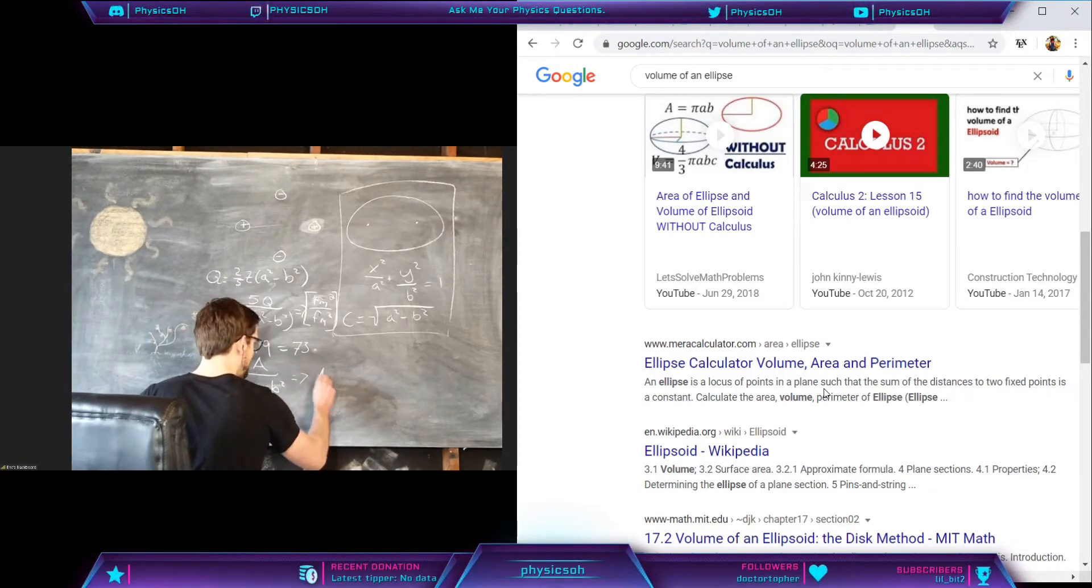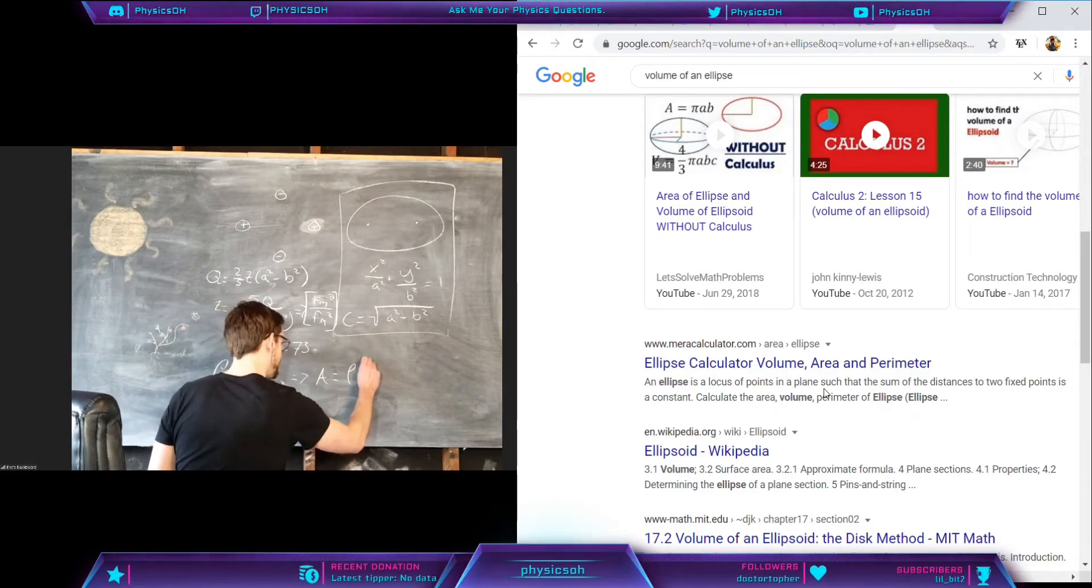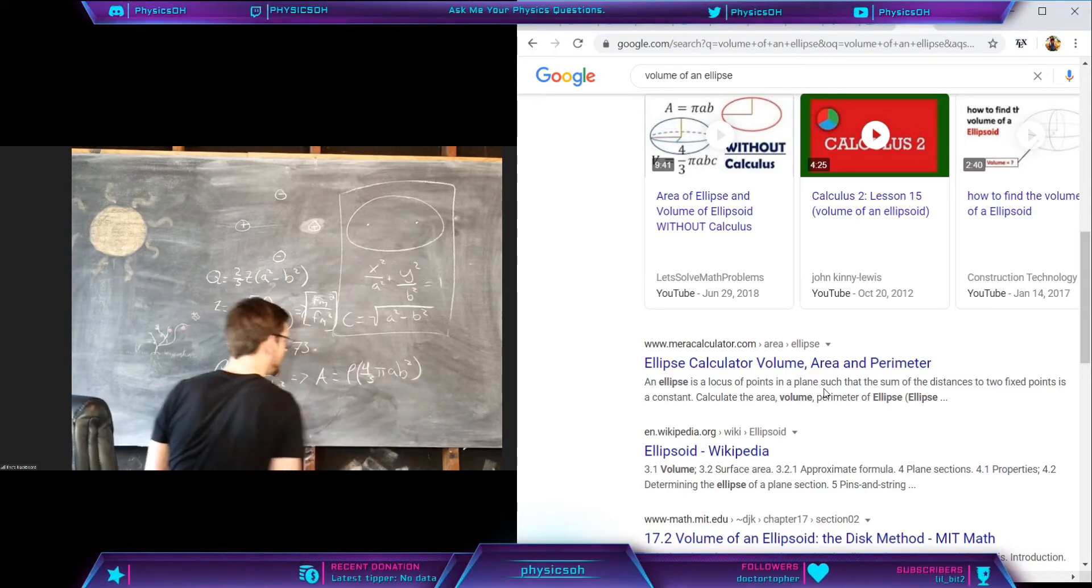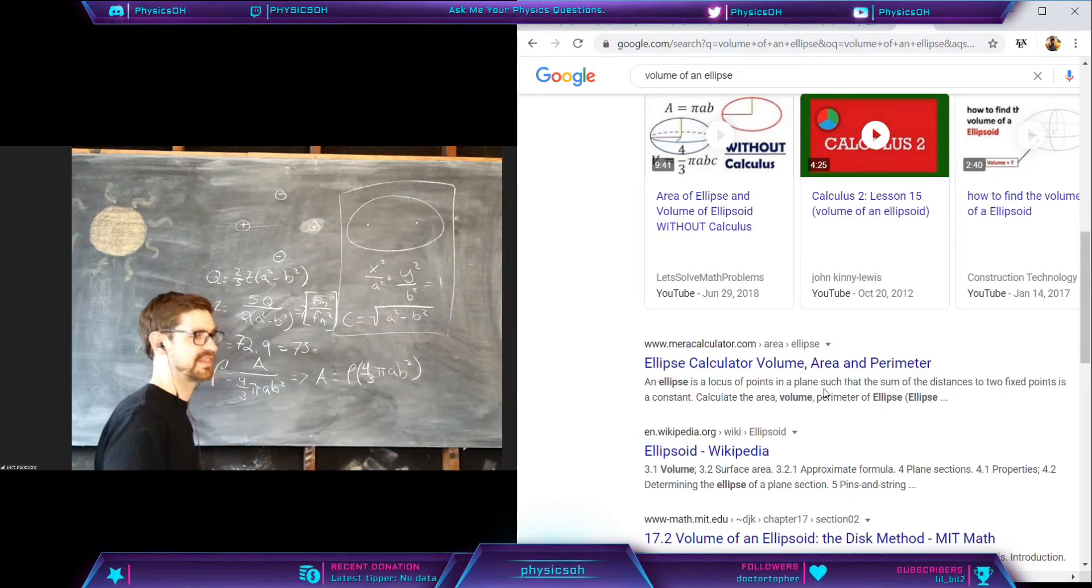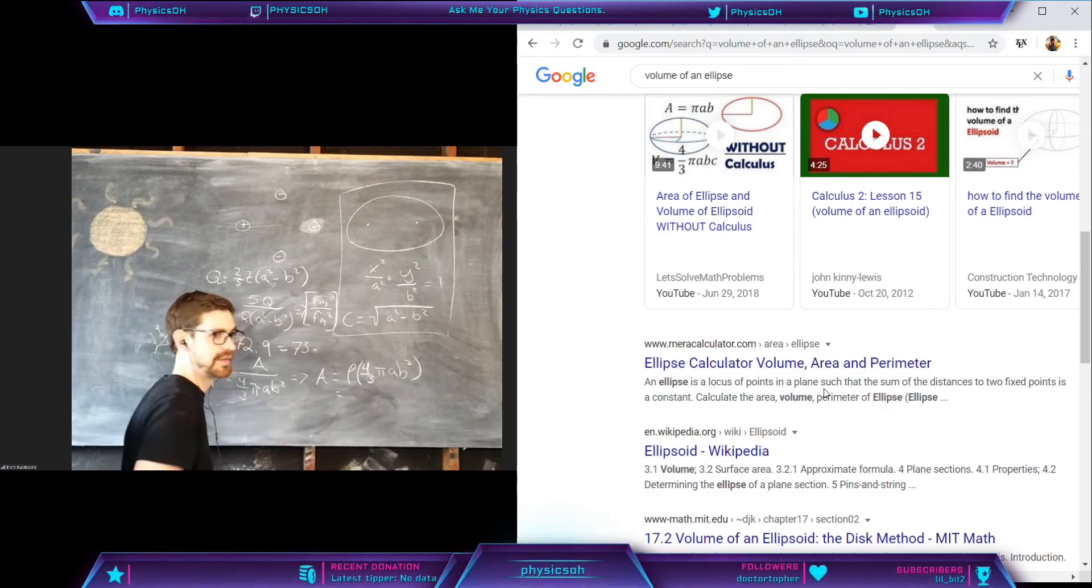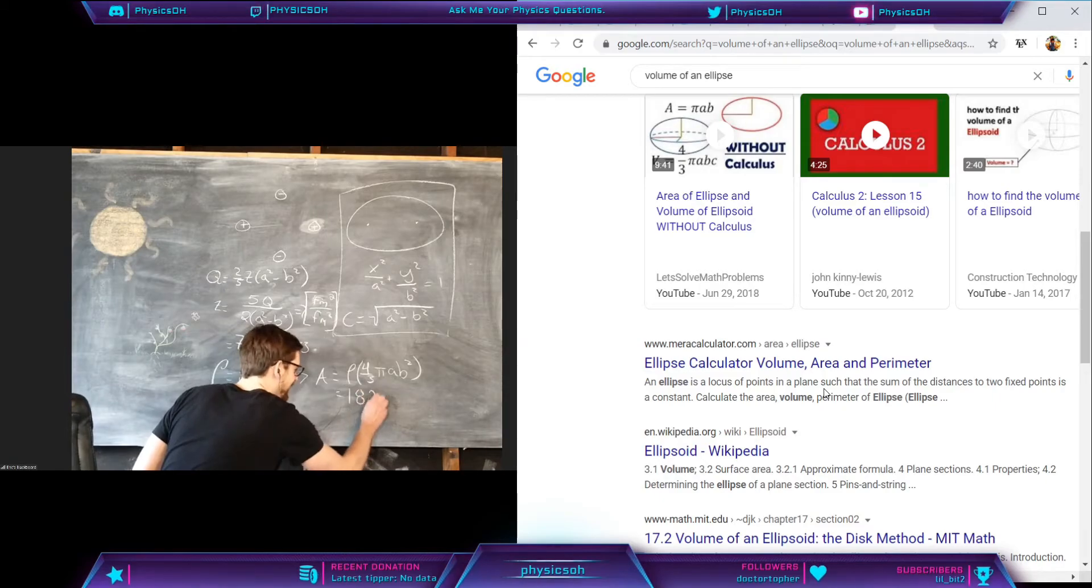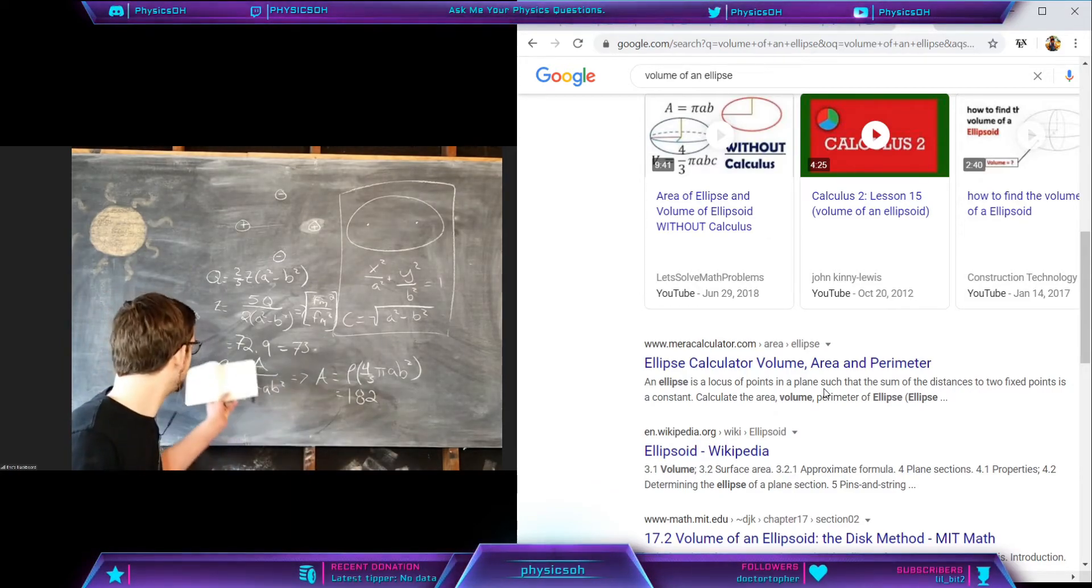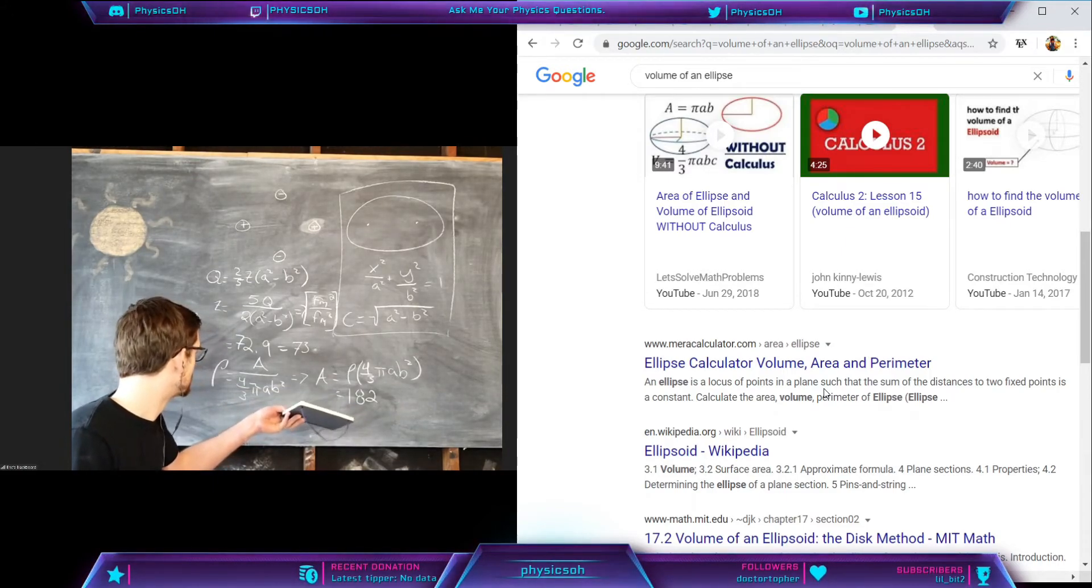For this I got, so this is gonna be A is equal to rho times four thirds pi A B squared. And I went ahead and plugged all those numbers for us. I know you can run a calculator, so I'm not gonna do that right now. Oh, I didn't write it down though. It turned out to be 182. I don't know, I'm glad I remember that.